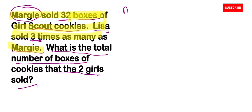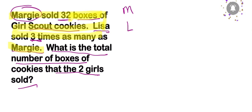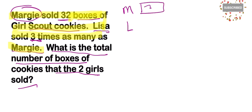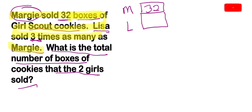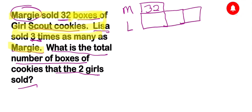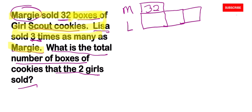We're going to use M to represent Margie and L to represent Lisa. We know that Margie sold 32 boxes, and we also know that Lisa sold three times as many — so three boxes, three times as many.